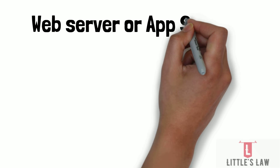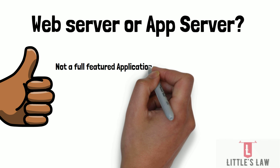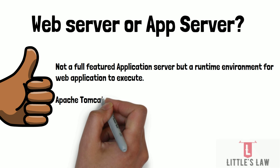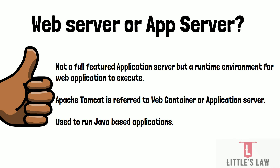A common question is: is Apache Tomcat a web server or an application server? Apache Tomcat is a servlet container — it is used to run Java-based web applications, but it is not a full-featured application server. Rather, it is a runtime environment that provides a way for applications to be executed. As a result, Apache Tomcat is sometimes referred to as a web container rather than a full-featured application server. It is responsible for managing the lifecycle of servlets and other web components, and for providing services such as request routing, security, and resource management.